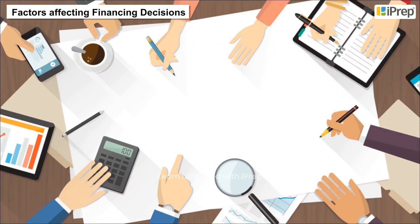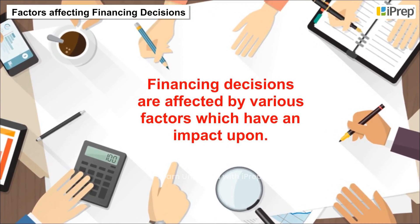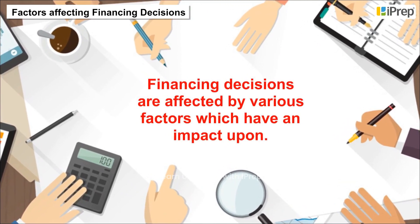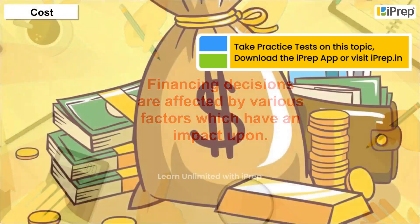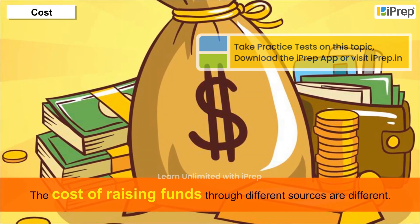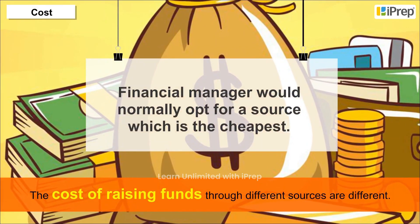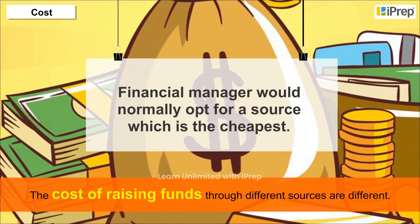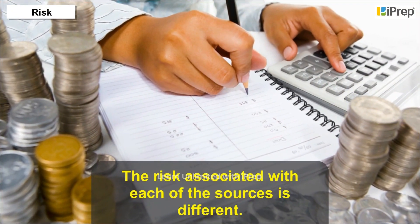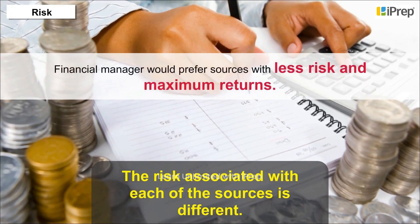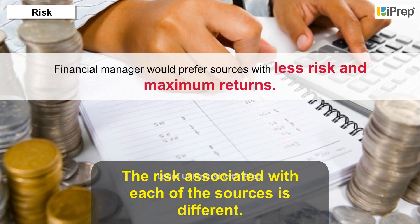Financing decisions are affected by various factors. The important ones are discussed below. Cost: The cost of raising funds through different sources is different, and a financial manager would normally opt for the cheapest source. Risk: The risk associated with each source is different, and a financial manager would prefer sources with less risk and maximum returns.